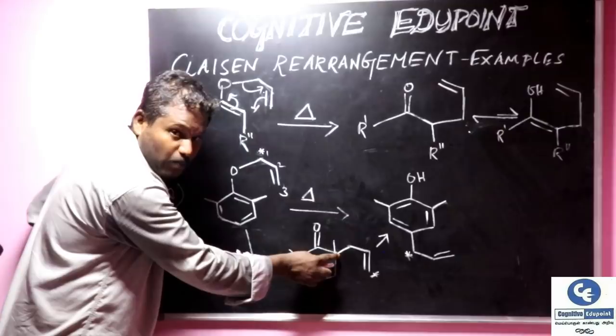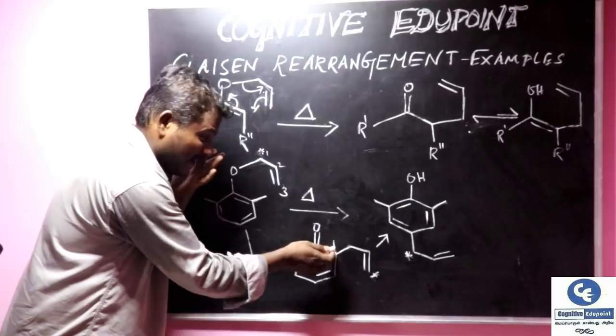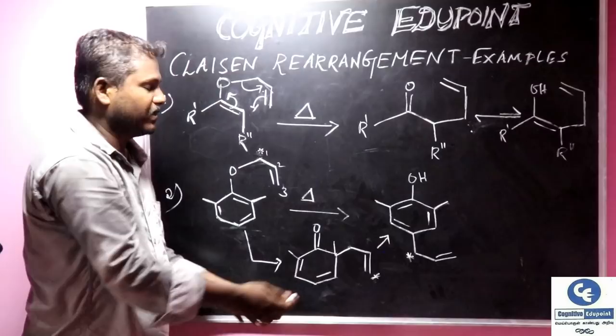The carbon marked, first carbon will be here. And again due to steric hindrance, this will further rearrange to a para-substituted product.